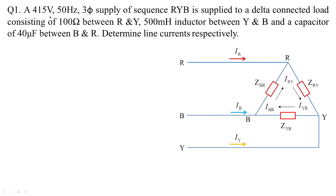The first problem: a 415 volts, 50 Hz three-phase supply of sequence RYB is supplied to a delta-connected load consisting of 100 ohms between R and Y, a 500 millihenries inductor between Y and B, and a capacitor of 40 microfarads between B and R. We need to determine the line currents.